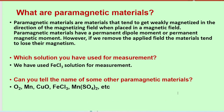What are paramagnetic materials? Paramagnetic materials are those materials which get weakly magnetized in the direction of the magnetic field. If the field is removed, the material loses its magnetism. They have permanent dipole moments, but their orientation is random. For measurement, we have used a FeCl₃ solution.